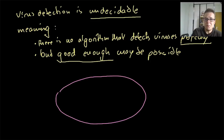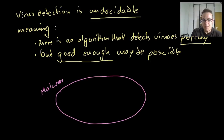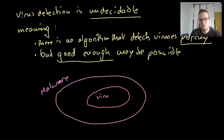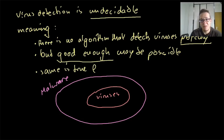As you may know, antivirus products detect malware, not just viruses — but viruses are a subset of malware. The same thing is true for malware in general: if we cannot detect the subset perfectly, we also cannot detect the superset of it.